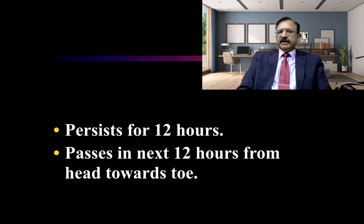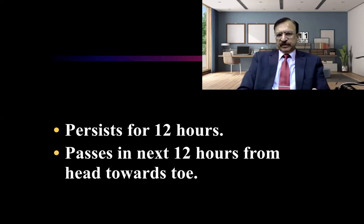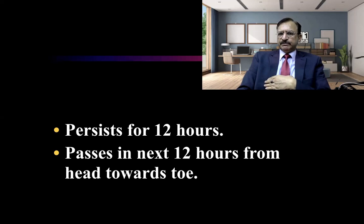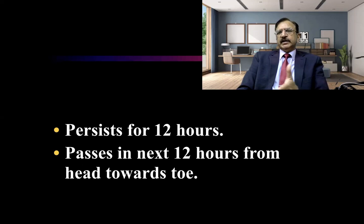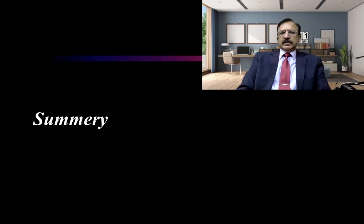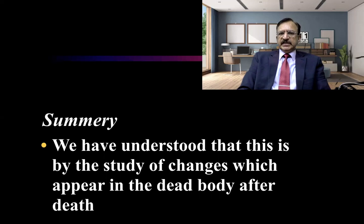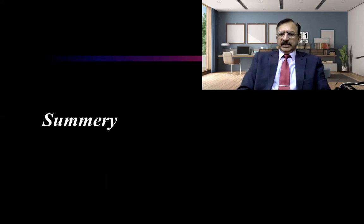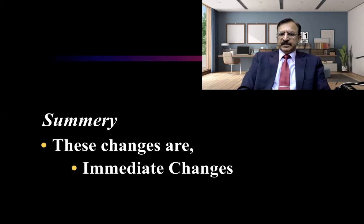In the next 12 hours, rigor mortis passes off in a similar head-to-toe manner. If rigor mortis is in the passing-off state — for example, the upper half has passed off but the lower half is still present — we give a time bracket of 24 to 36 hours. That is how we estimate the time since death. In summary, we have discussed the rate method and the early changes — algor mortis, livor mortis, and rigor mortis — which help in the determination of time since death.